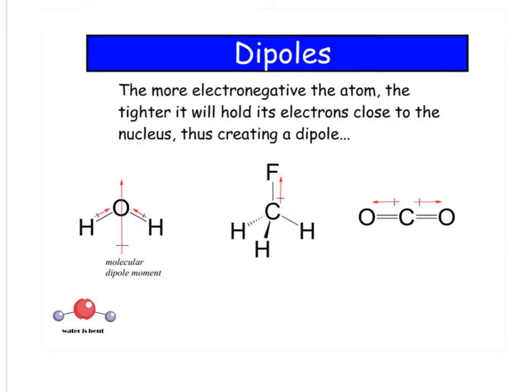Dipoles. If you have a polar molecule, you have a dipole moment. Hydrogen and oxygen have different electronegativities. Oxygen is more electronegative than hydrogen. So we draw an arrow pointing to where the electrons hang out at, and then a little plus sign over here because hydrogen is partially positive and oxygen is partially negative.